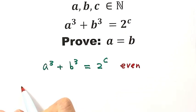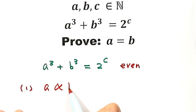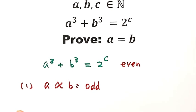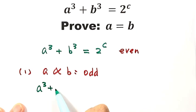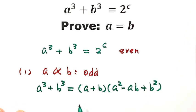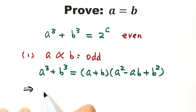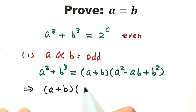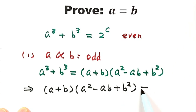Now let's see the first case: when A and B are both odd numbers. Starting from the left hand side, A cubed plus B cubed factors as (A + B)(A² − AB + B²). We replace the left hand side with this product, giving (A + B)(A² − AB + B²) equals 2 to the power of C.